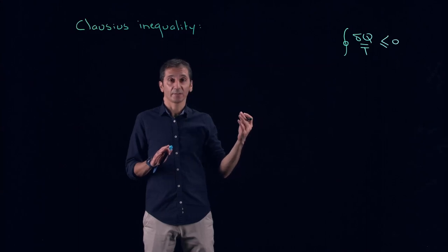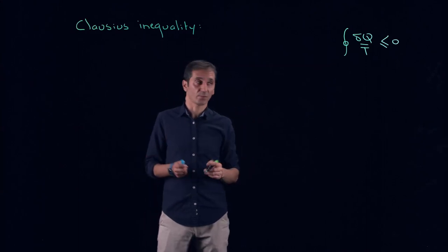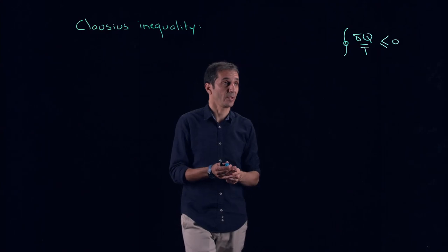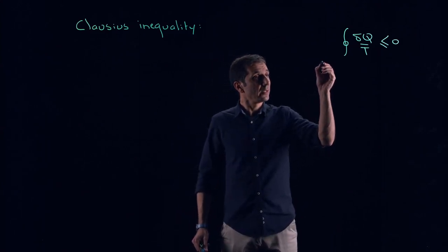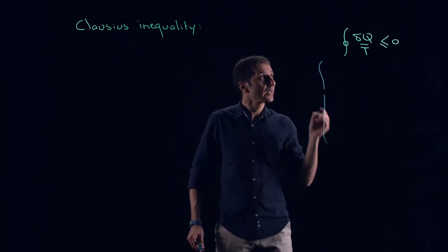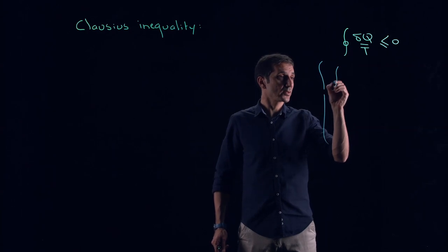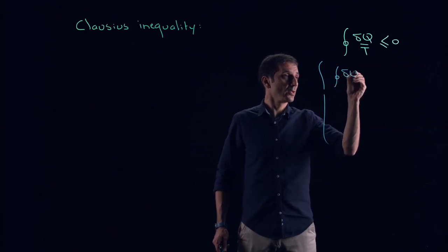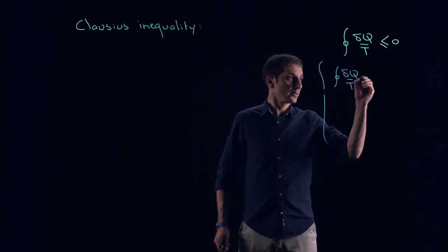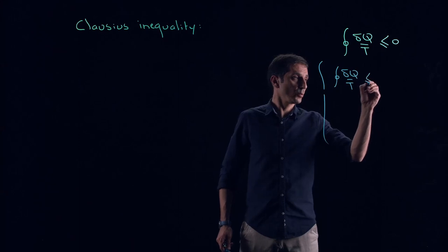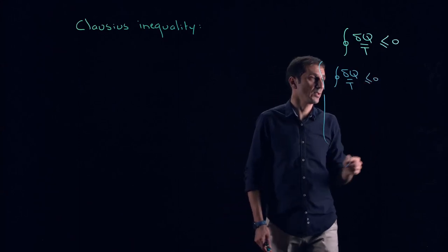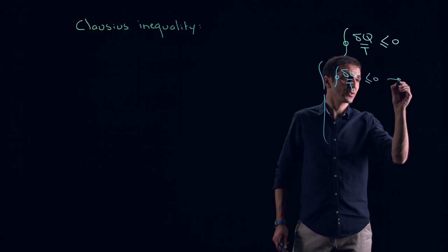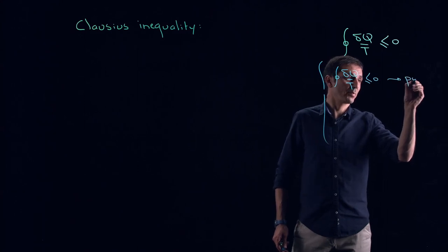If not, if it's equal to zero, this means it's reversible. So I will summarize this here. So if your calculations, delta Q over T, give you a value which is smaller or equal to zero, so what you are suggesting as a cycle is possible.